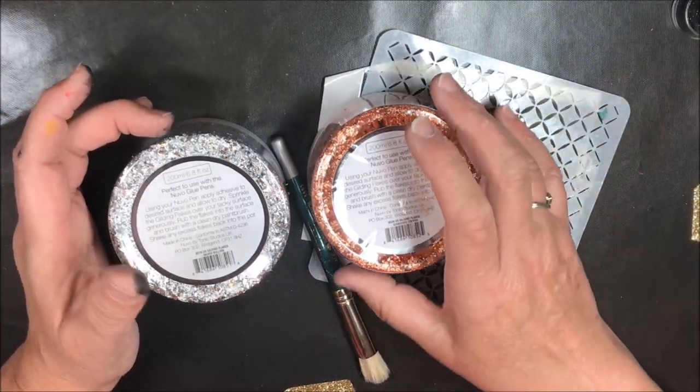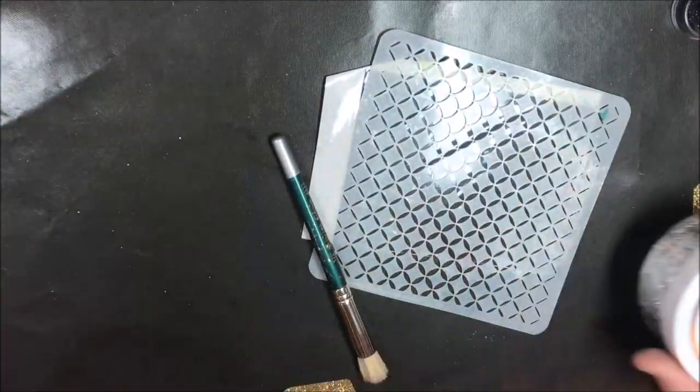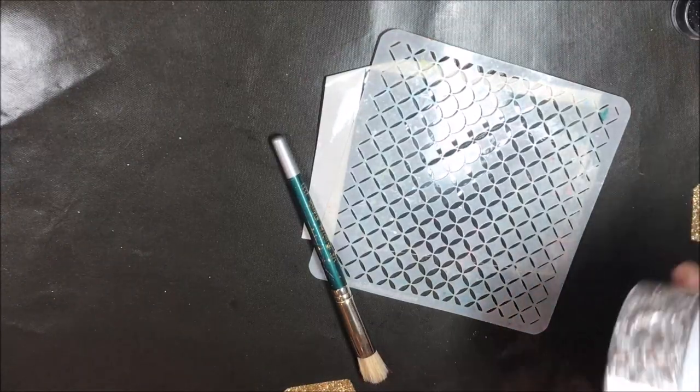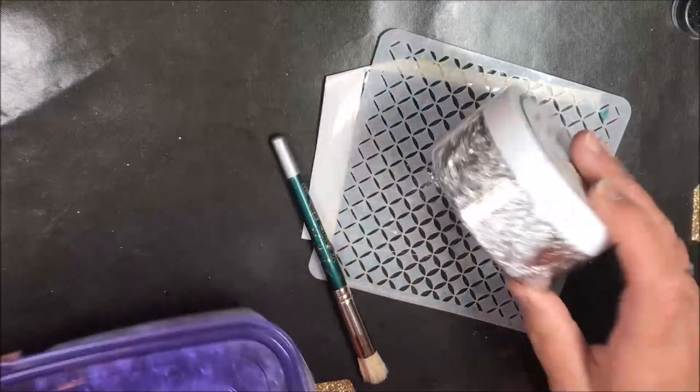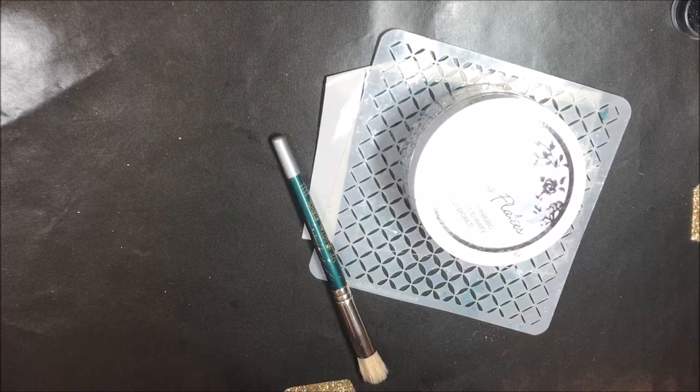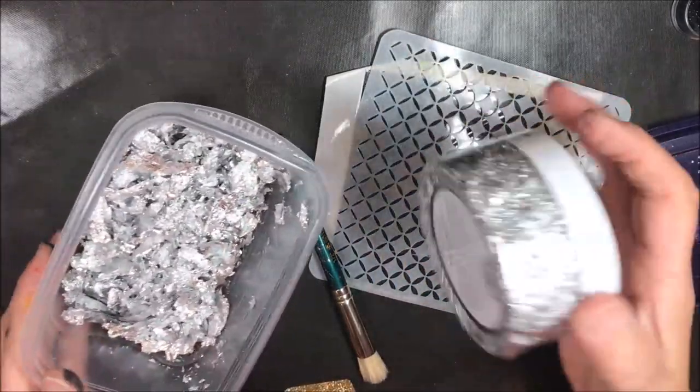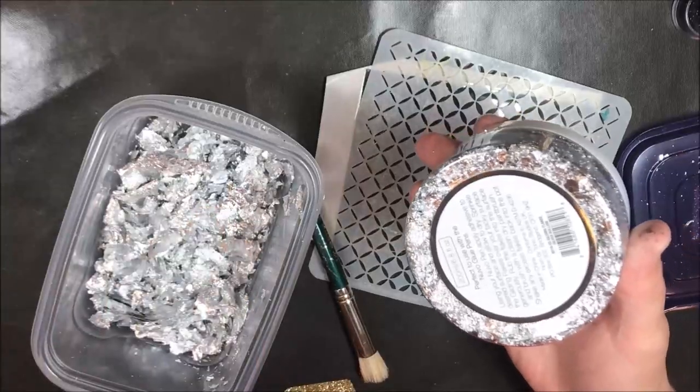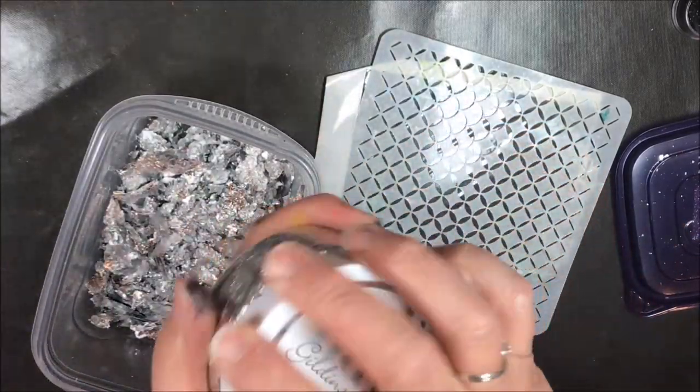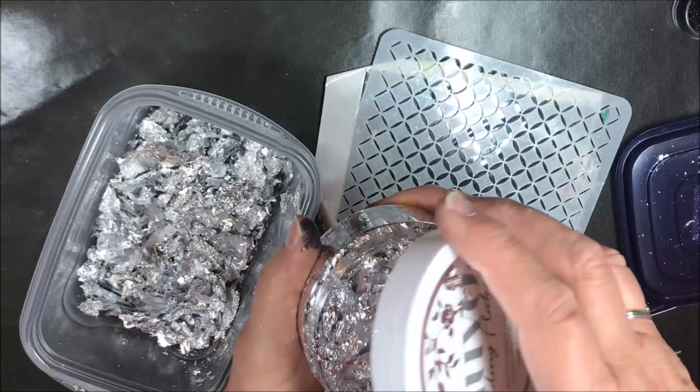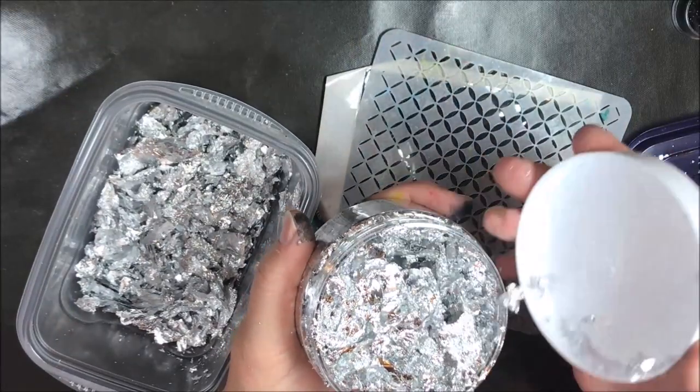I'm going to move these pieces to the side because whenever you have gilding flakes you need to take those gilding flakes out of these containers and put them into a secondary container. There's a couple of reasons why. First of all, each of these will fill this up three times or more because they're very compressed in these jars. You can see how compressed that is. This is a brand new jar.